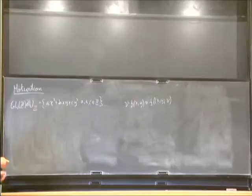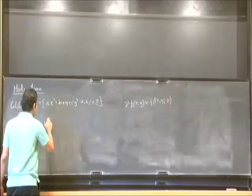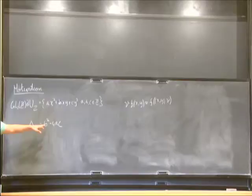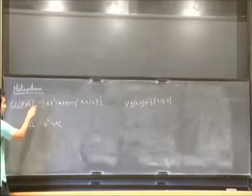The ring of invariants of this action is particularly nice. It is generated by the discriminant, which of course we know as B² - 4AC. Any invariant quantity under this group is going to be a polynomial in the discriminant.